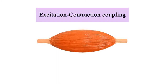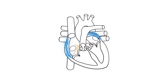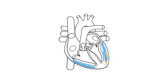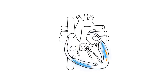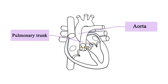By knowing the direction electrical current flows through the heart, it is possible to know the direction of muscle contraction. Since electrical signaling begins in the right atrium and spreads from the top of the atria down, contraction of the heart begins in the atria and atrial contraction occurs from the top down, sending blood to the ventricles. Electrical flow in the ventricles travels from the bottom up, so ventricular contraction starts at the bottom and works up, sending blood to either the pulmonary trunk or the aorta.